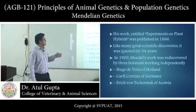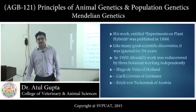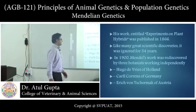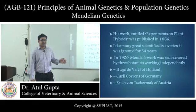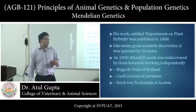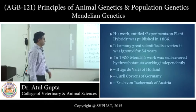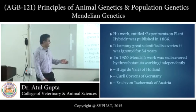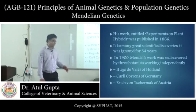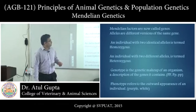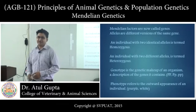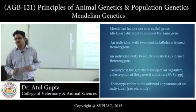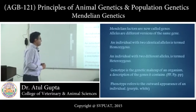His work entitled 'Experiments on Plant Hybrids' was published in 1866. Like many great scientific discoveries, it was ignored for 34 years, but in 1900 Mendel's work was rediscovered by three botanists working independently: Hugo de Vries of Holland, Correns of Germany, and Eric von Schermack of Austria.